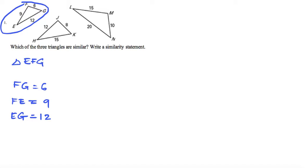Now the triangle in the middle, let's do the same thing. We're going to list them from smallest to largest. That's JK = 8, then JH = 12, and then HK = 15.